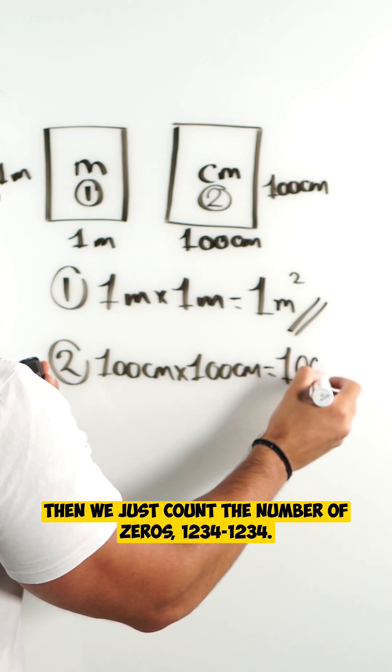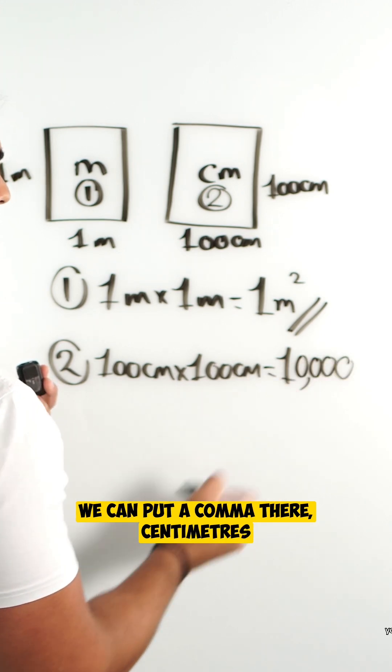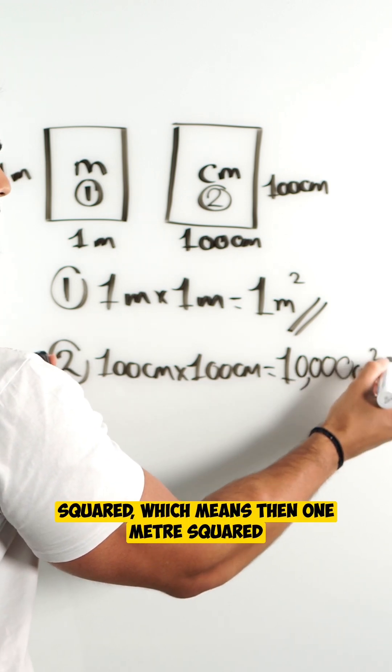One, two, three, four. One, two, three, four. You can put a comma there. Centimeters squared.